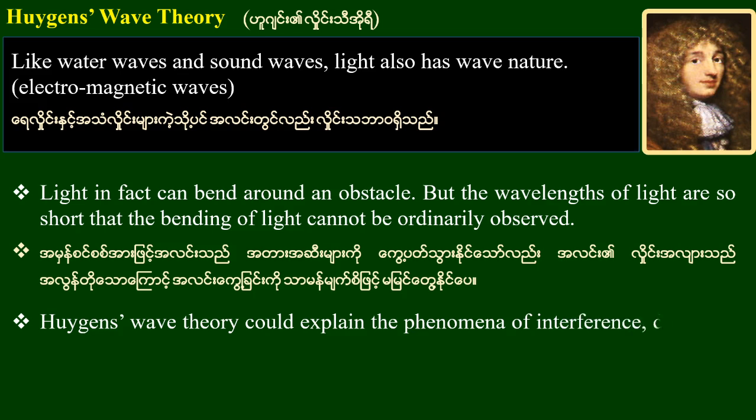Huygens' wave theory could explain the phenomena of interference, diffraction, and polarisation of light.